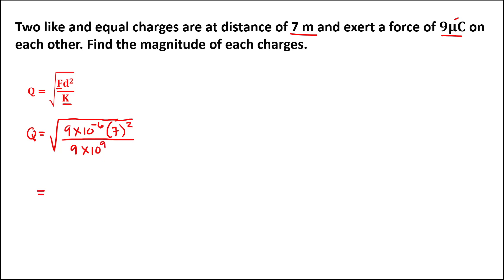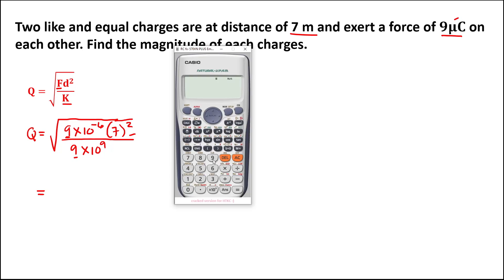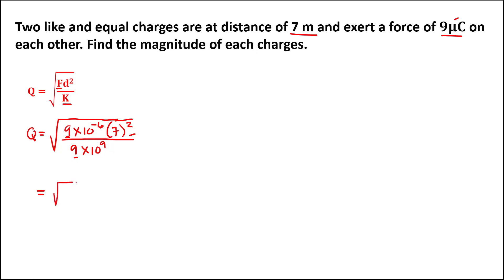To simplify, first multiply these two numbers: 9 times 7 squared, then divide by 9. So 9 times 7 squared divided by 9 equals 49. For the exponent, since we are dividing, we subtract the exponents: negative 6 minus 9, which equals negative 15. So we have the square root of 49 times 10 to the power negative 15.